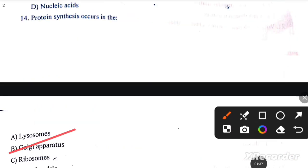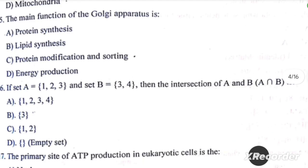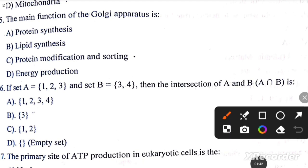Protein synthesis occurs in Golgi apparatus. The main function of Golgi apparatus is protein modification and sorting. Next question: if A is a set {1, 2, 3} and B is a set {3, 4}, then the intersection of A and B is 3.